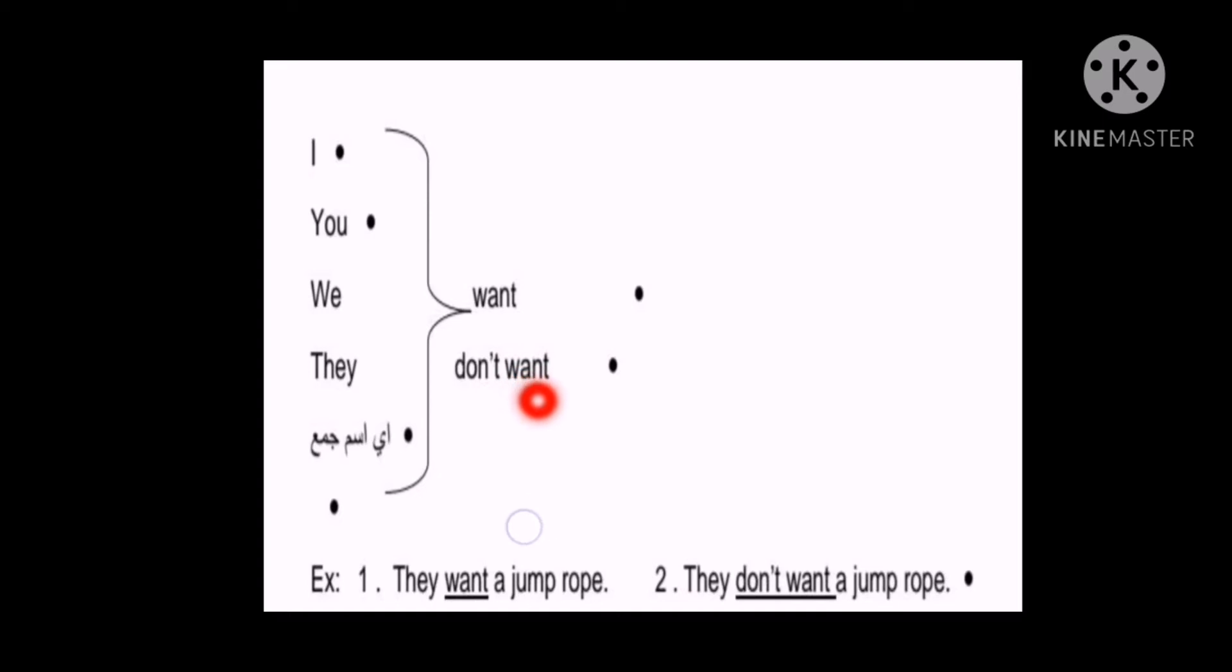Perfect. Now here look at the word want. Let's look at the word want. Want here, the A, we pronounce it like O. Right? We pronounce it as if it's O. So we say want. Want. Perfect. Now let's read the examples. Example number one: They want a jump rope. So why here do we have want? Because we go back and look at the subject. It's the first element, the first element in the sentence is the subject. So we go back and look at the subject. It's a plural pronoun, that's why we wrote want. Sentence number two: They don't want a jump rope. They is a plural pronoun, so in the negative case, they don't want. Don't want. Perfect.